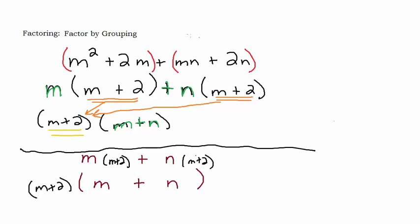The keys are: group the first two, group the last two, take out the greatest common factor in each grouping. What you have left in the parentheses should be exactly the same — if it's not exactly the same, factor by grouping will not work and you'll have to try something else. Whatever that matching thing in the parentheses is, you pull it out in front and write what you have left as your second factor.